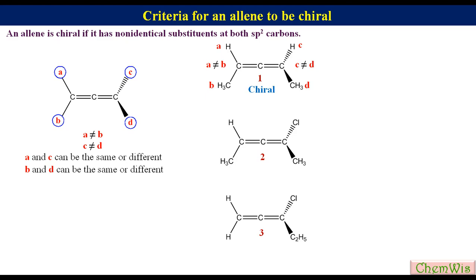In compound 2, on the left sp2 carbon A is H and B is CH3, so A and B are different. On the right sp2 carbon, C is chlorine and D is CH3, so C and D are different. This compound will also be chiral, even though B and D are the same. In compound 3, A and B are both H; since A and B are the same, this compound is achiral.